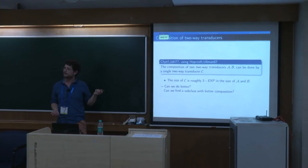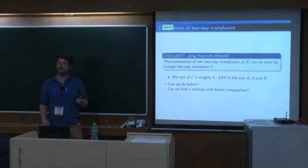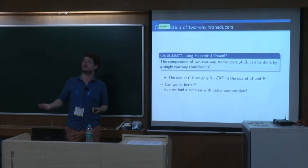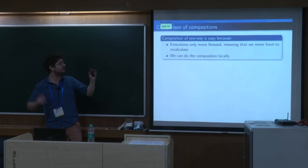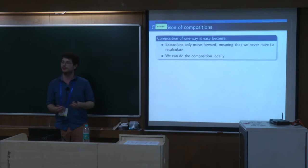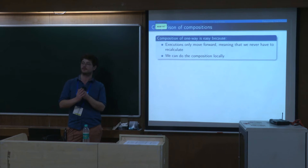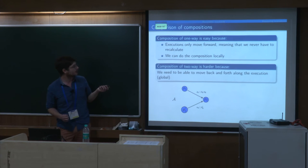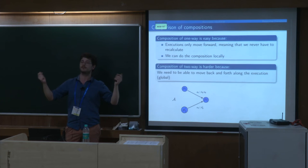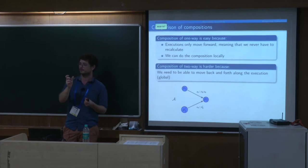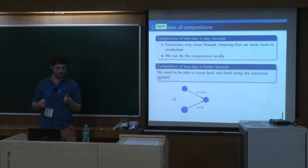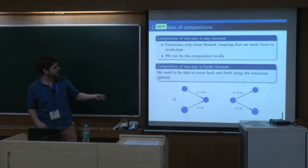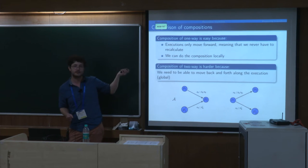Can we find a subclass with better composition? To understand this, we need to see why it's easy in the one-way case and hard in the two-way case. In the one-way case, execution only moves forward: when you make a choice, even if non-deterministic, you never have to revisit it — you can solve everything locally. But in the two-way case, you cannot solve everything locally; you have to think globally. Every time you go to a position you need to take the same transition, so you need to consider the entire run.